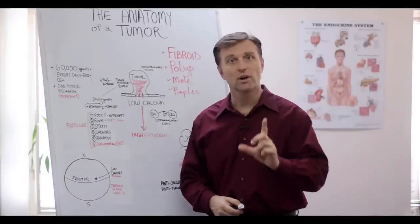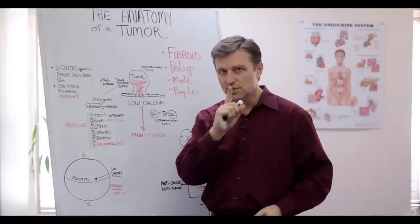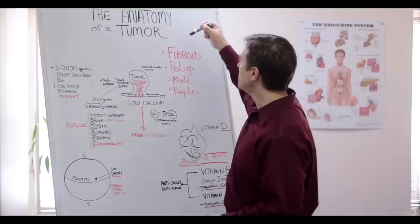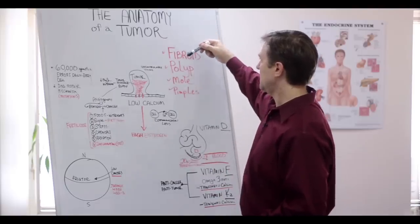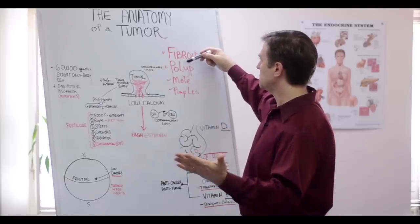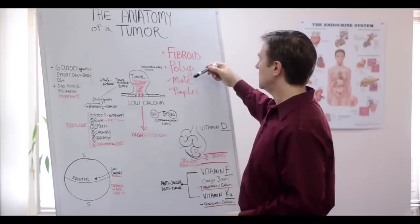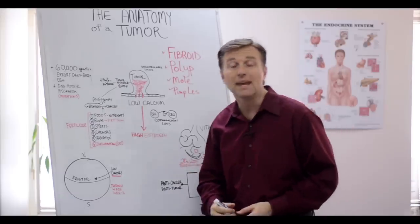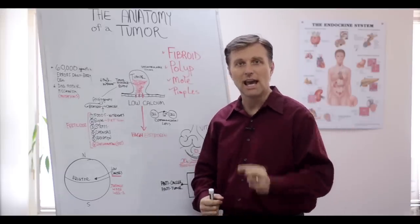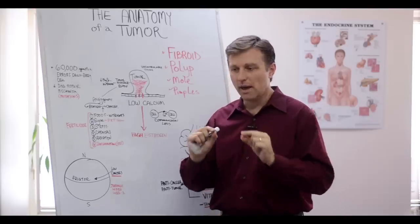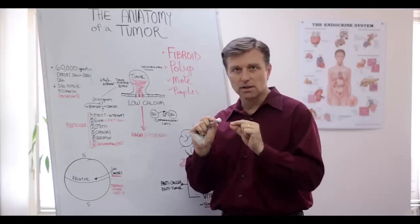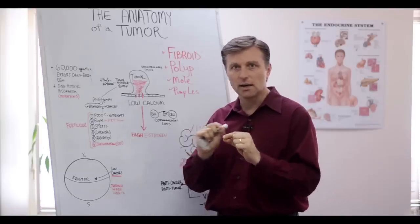Hey, this is Dr. Berg again. In this video, we're going to talk about the anatomy of a tumor. A lot of women are getting fibroids, and in the general population, men and women are getting polyps. Some people get moles, some people get pimples. If you look closely in the mirror at your face, you may have all these little bumps that are occurring and then they go away and come and go.